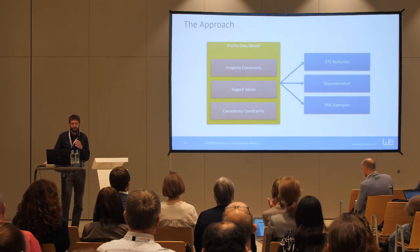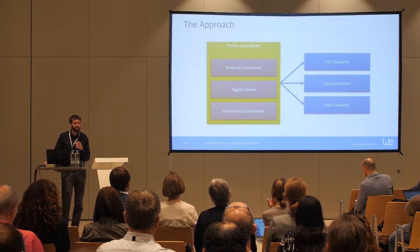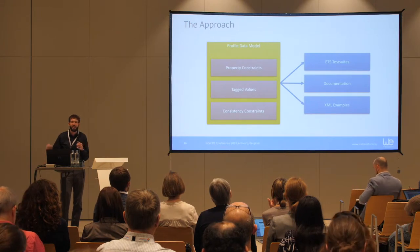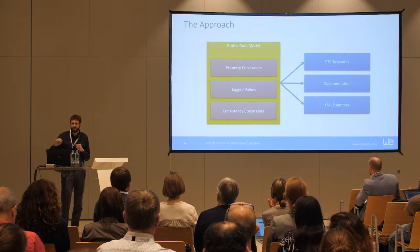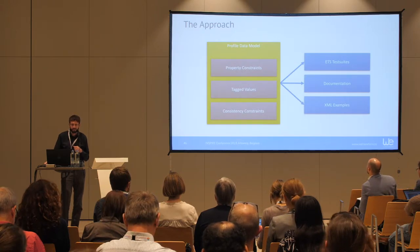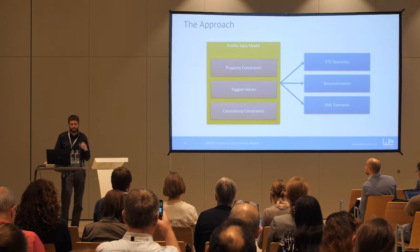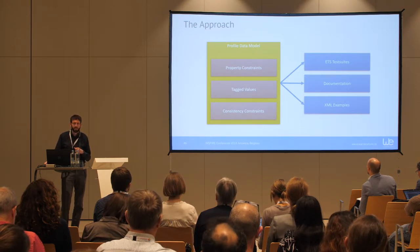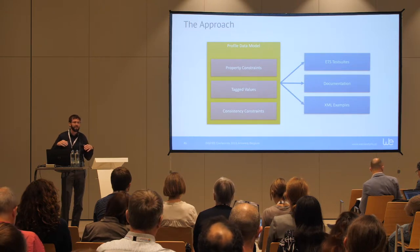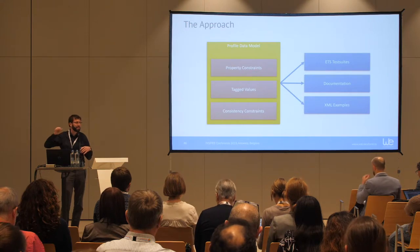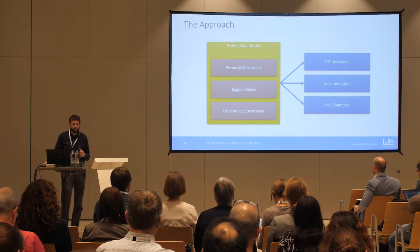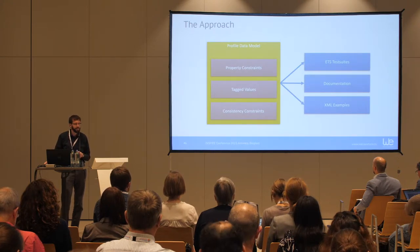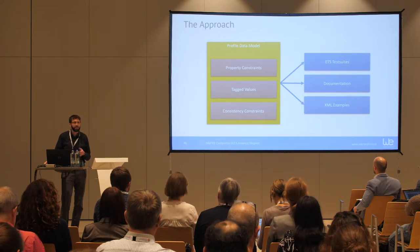We also added tagged values and consistency constraints. Consistency constraints are conditions defined across multiple elements in your dataset — like if value A is a certain thing, then value B has to be a certain thing. We are using this model, set up so that we can automatically generate both ETS test suites — which the INSPIRE Reference Validator also uses — and documentation and XML examples, which implementers often request so they know how to implement things in their systems.